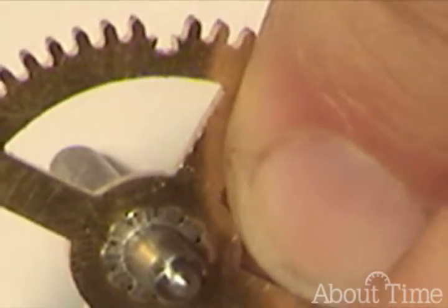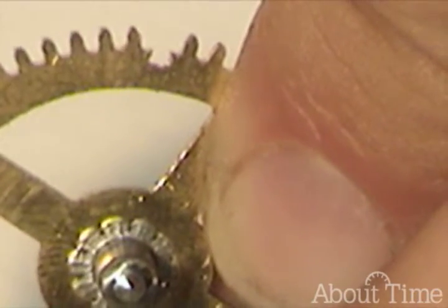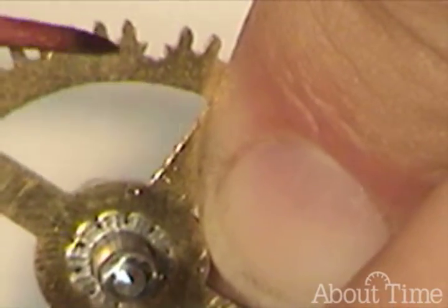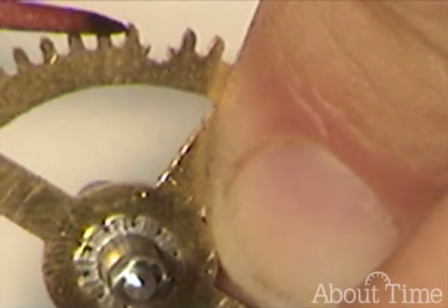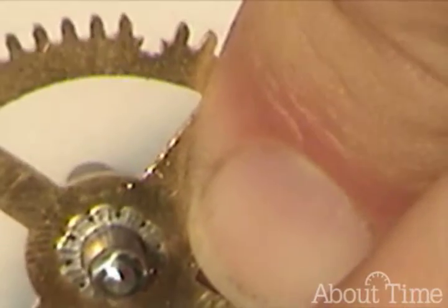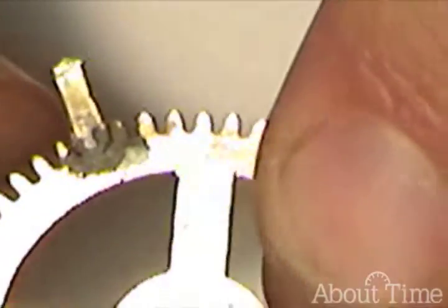And hopefully you can see that this is a keystone shape. It's not just a straight notch, it's wider at the bottom than it is at the top. Once we have that shape we can take a plug of brass and insert the plug into the keystone.